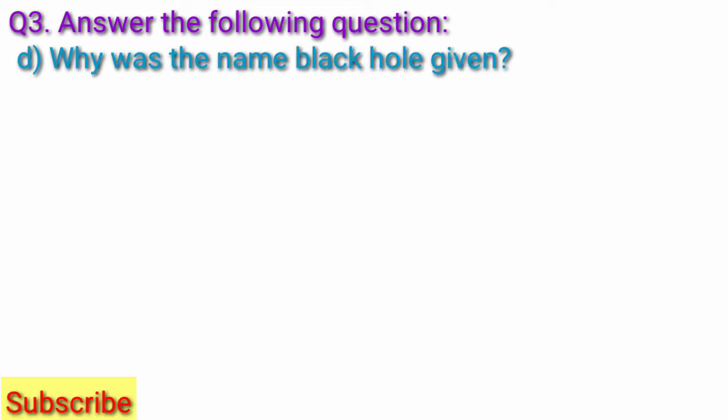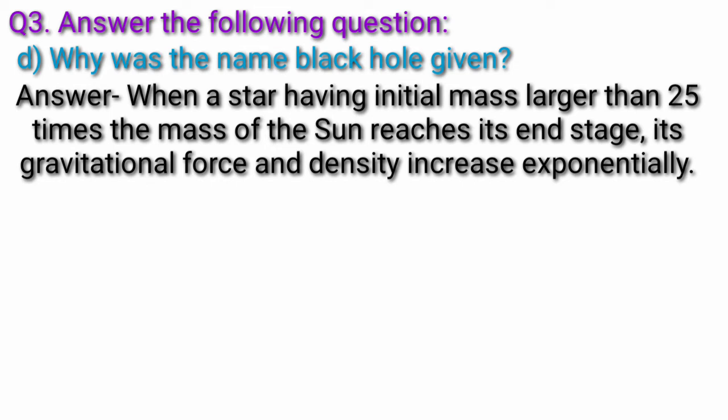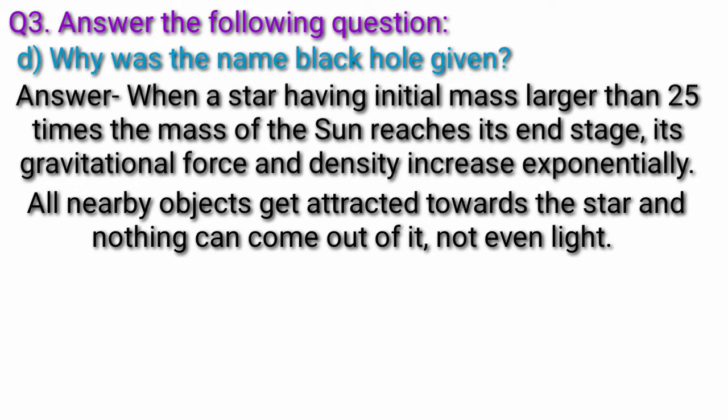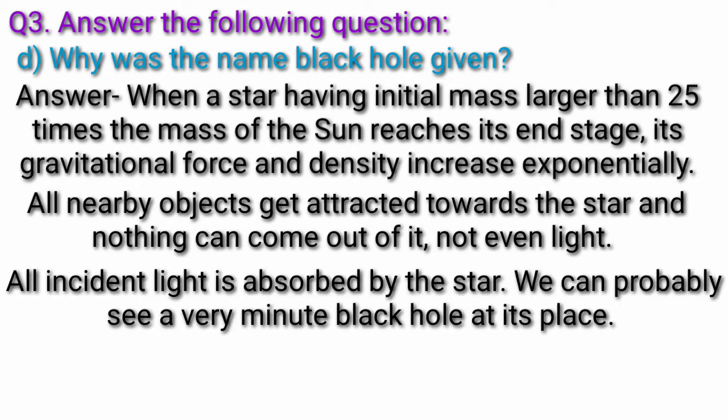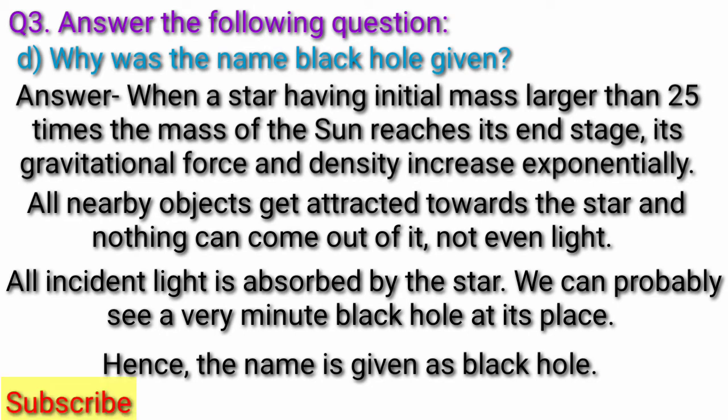Question D, why was the name black hole given? Answer, when a star having initial mass larger than 25 times the mass of the sun reaches its end stage, its gravitational force and density increase exponentially. All nearby objects get attracted towards the star and nothing can come out of it, not even light. All incident light is absorbed by this star. We can probably see a very minute black hole at its place. Hence, the name is given as black hole.